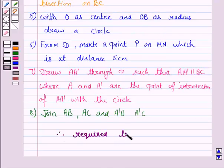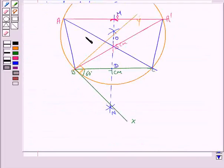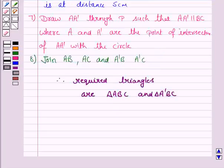So, these are the two required triangles: triangle ABC and triangle A'BC. This completes the question and the session. Must write all the steps of constructions. So, bye for now. Take care. Have a good day.